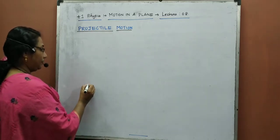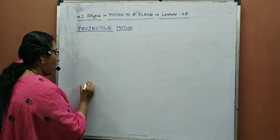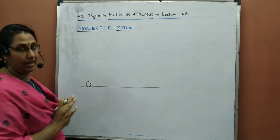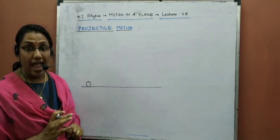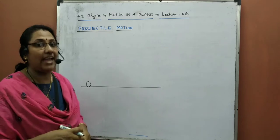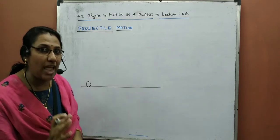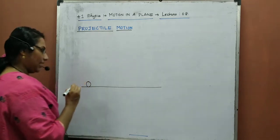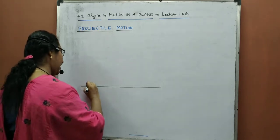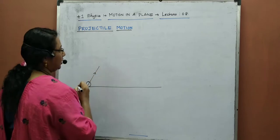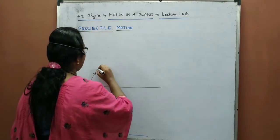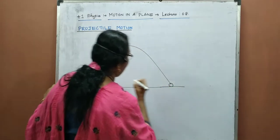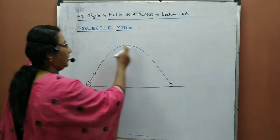Suppose a ball is on a ground. We go to that ground and kick that ball. We kick a ball in a direction so that it undergoes a parabolic path and comes back to the ground. This is what kicking means.